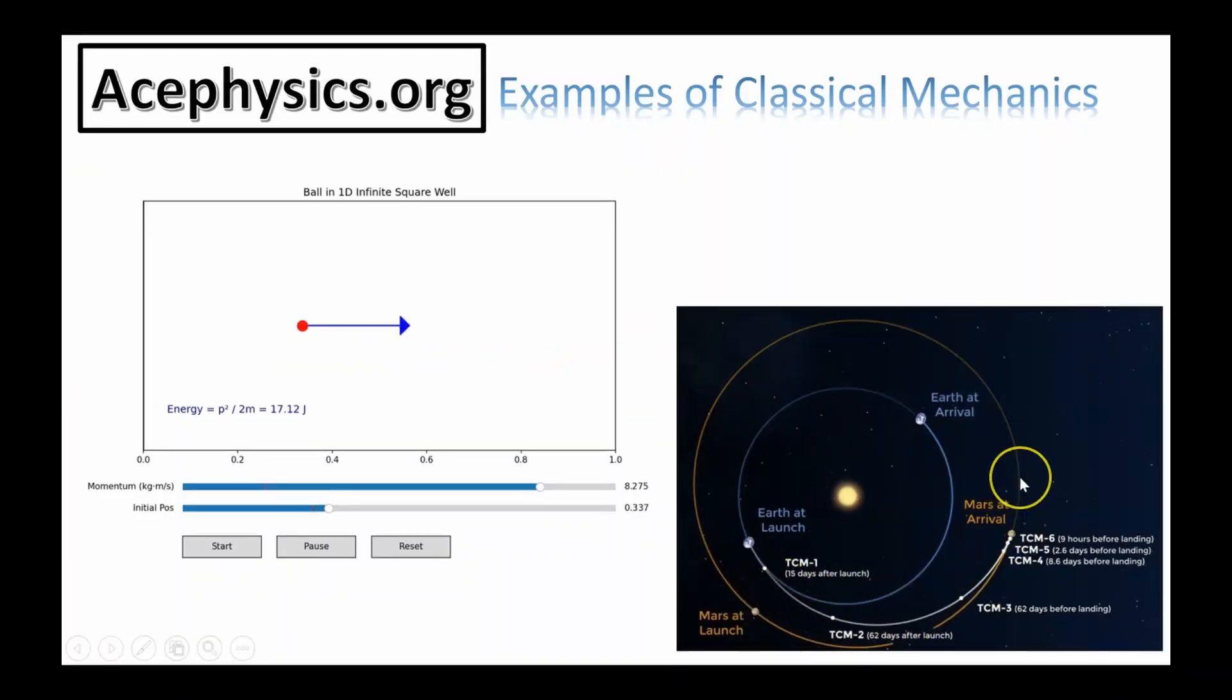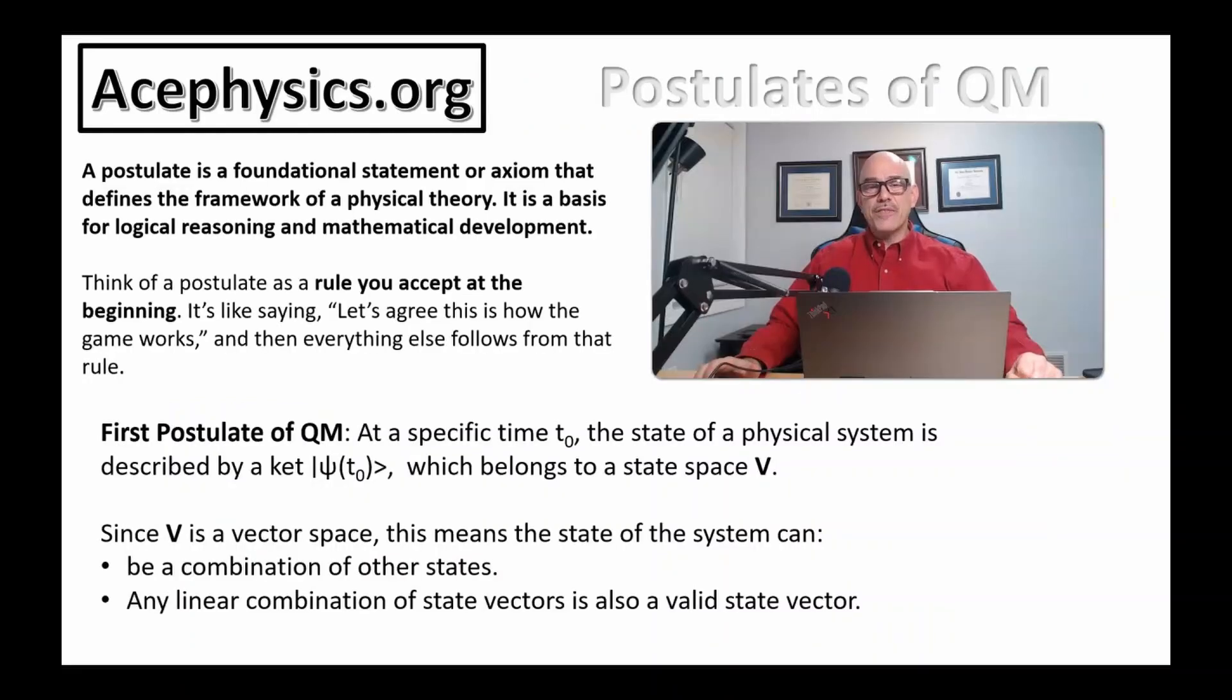Even complex paths, like the Mars rover trip from Earth to Mars, are designed this way. Once we know the initial momentum and engine thrust, classical mechanics lets us plan the full trip before launch.